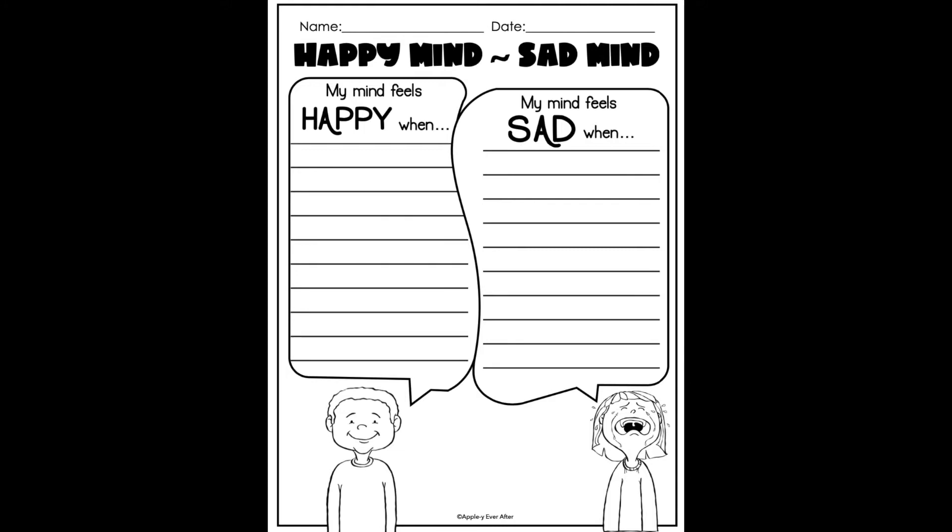We can feel happy about something maybe ending or changing, but also sad to see that something's ending or changing. A good example for me where I feel both of these feelings would be the end of school. I'm so happy and excited for the summer, but I'm so sad to have to say a temporary goodbye to my friends and my students. So I feel both emotions — it's kind of that bittersweet moment.